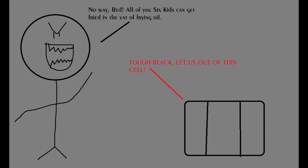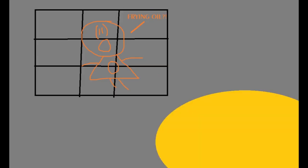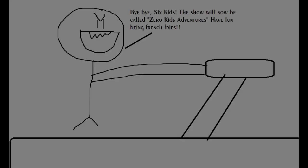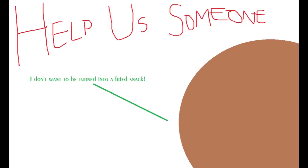Tuff Black, let us out of this cell. No way, Red. All of you six kids can get fried in the vat of frying oil. Frying oil? Bye-bye, six kids. The show will now be called Zero Kids Adventures. Have fun eating french fries. Help us, someone. I don't want to be turned into a fried snack.